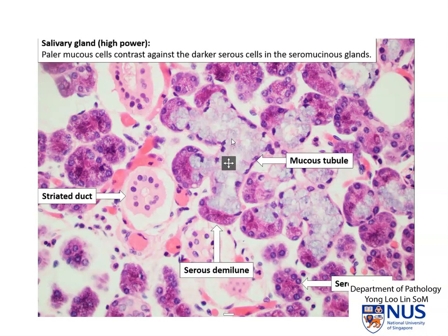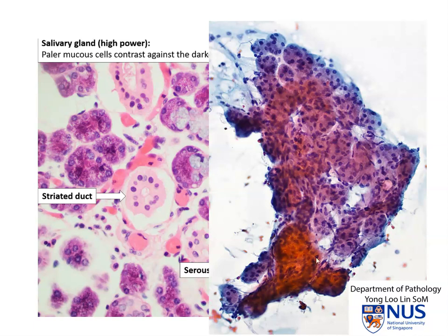The histology of normal salivary gland shows seromucinous glands with serous cells and mucinous cells, and we have here the striated duct. This duct actually corresponds to the ducts that we see on cytology. And even on histology, you can appreciate a somewhat oncocytic appearance.